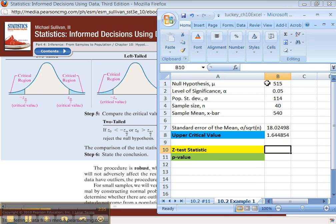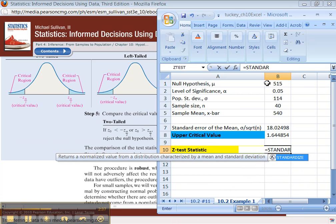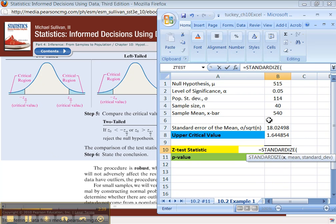Now the test statistic. That would be standardized again. X bar, which is the 540. The mean, which was 515. And then the standard error, not the standard deviation, standard error, because you're talking about a sample now. There we go.